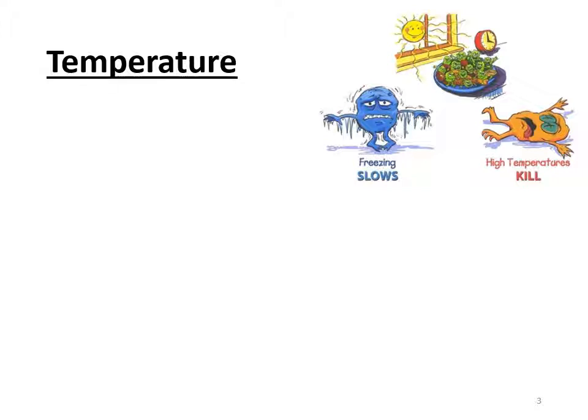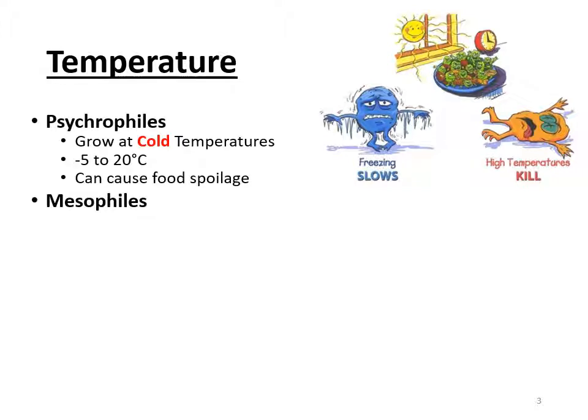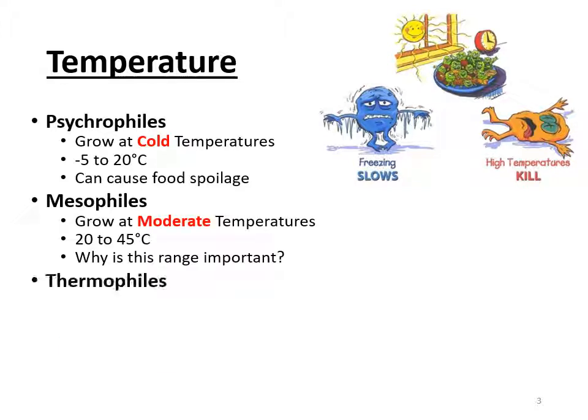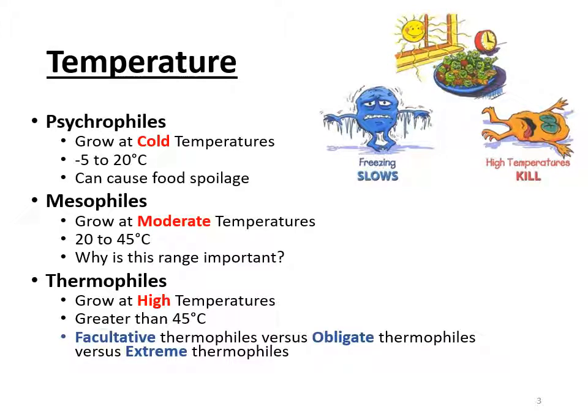When we talk about temperature requirements, we have three main categories — you have to remember these terms. We have psychrophiles, we have mesophiles, and we have thermophiles. The psychrophiles — I like to call them the 'psycho-philes' — they like really cold temperatures.